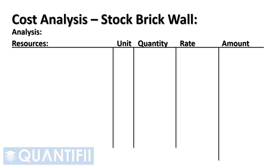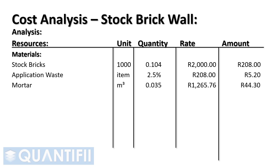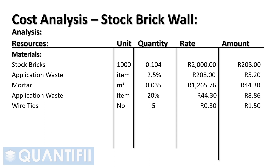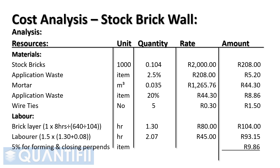Stock bricks for a cavity wall: 104 bricks per square meter times 2,000 Rand per thousand equals 208 Rand per square meter, plus application waste of 2.5%. Mortar: 0.035 cubic meters per square meter multiplied by 1,265.76 Rand, plus application waste on mortar of 20%. 5 wire ties per square meter. The labor constant for an artisan is 1.3 hours. We use the same labor constant for the general laborer, add 0.08 hours per square meter for cleaning cavities, multiplied by 1.5 laborers. Lastly, we add 5% to the total cost for labor for forming and closing perpins. The total cost for a square meter of brickwork is therefore 474 Rand and 87 cents per square meter.